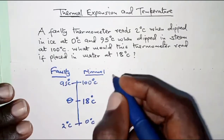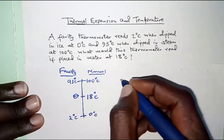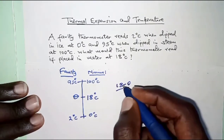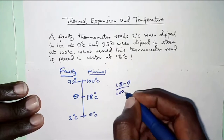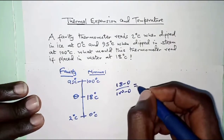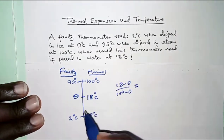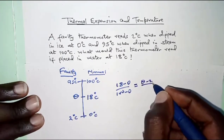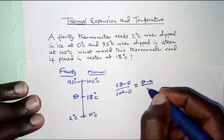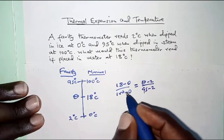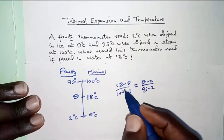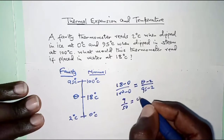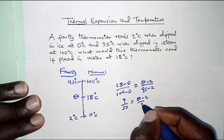So we set up the equation: (18 minus 0) over (100 minus 0) equals (theta minus 2) over (95 minus 2). The left-hand side simplifies to 9 over 50, and the right-hand side is (theta minus 2) over 93.